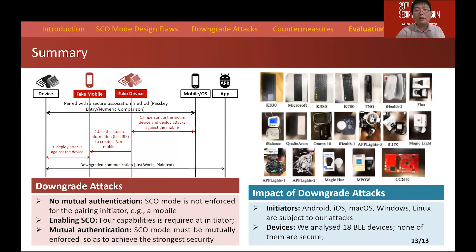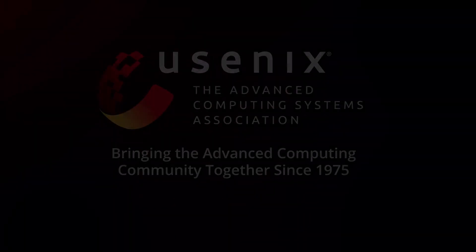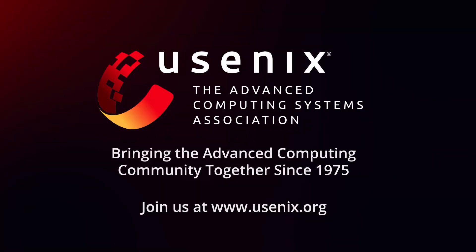We now conclude our talk. In this talk, we introduced the downgrade attacks. The cause of the attack is that there is no SCO mode enabled at the initiator side. Regarding this, there are four capabilities that are required. Our conclusion is that SCO mode must be enforced at both sides so as to achieve the strongest security. We evaluated our attacks on multiple OSes and many real devices. Thank you very much for your valuable time.